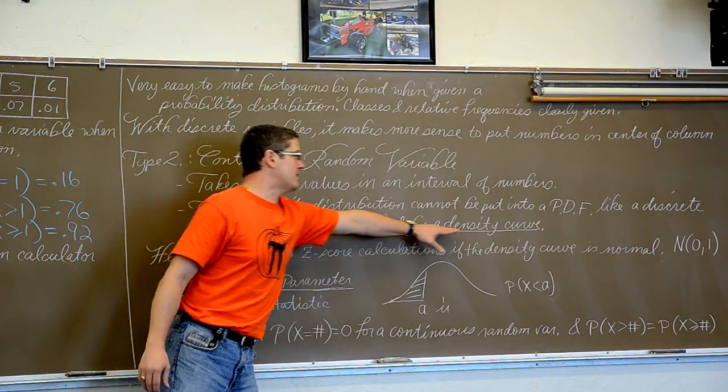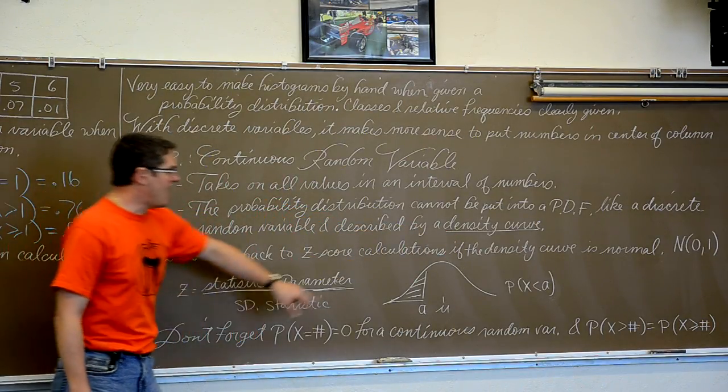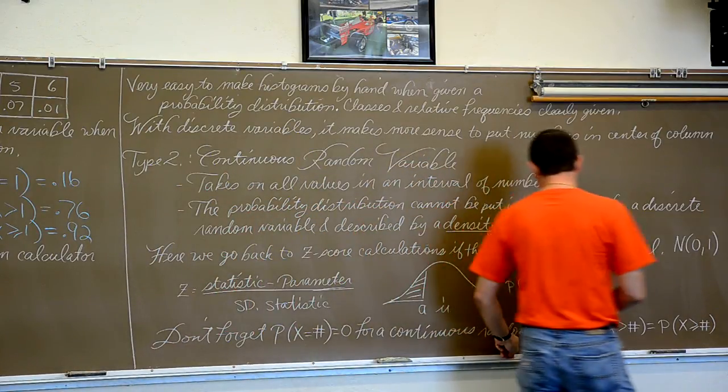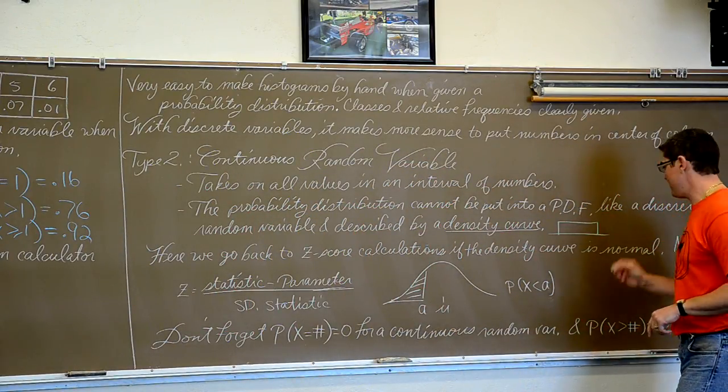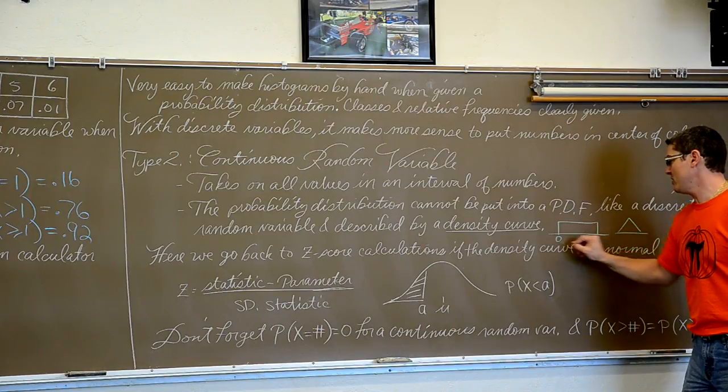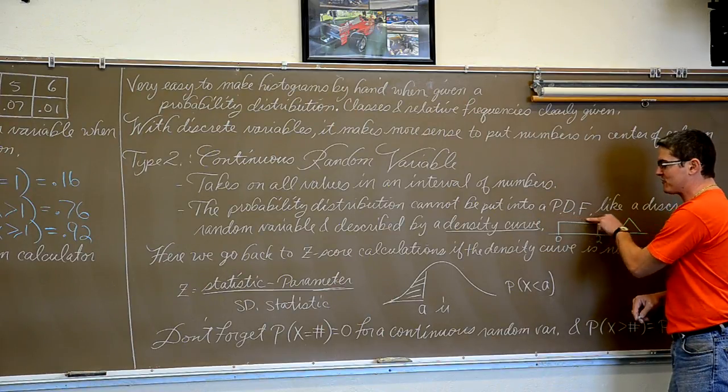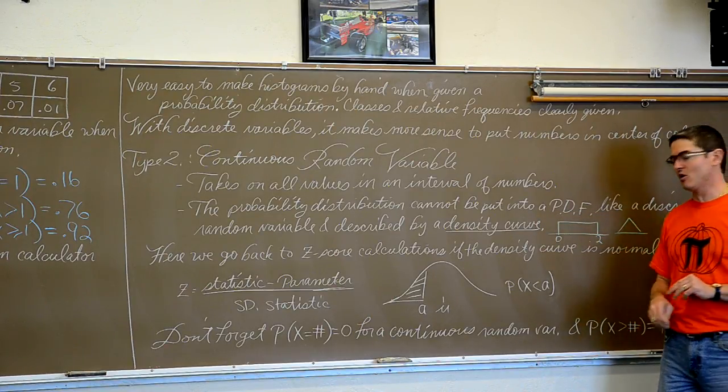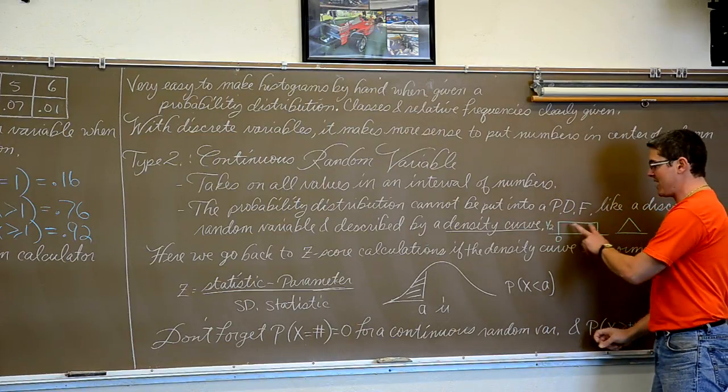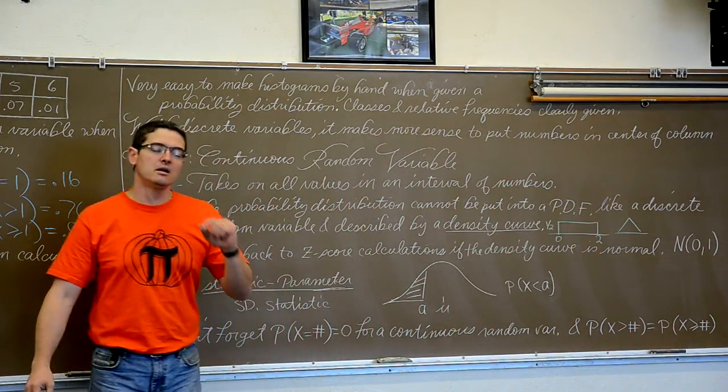That means that we can only describe a continuous random variable with a density curve. And you remember what a density curve is, right? It doesn't have to be a nice bell shaped curve. A density curve could be in the shape of a rectangle. It could be in the shape of a triangle. All you need for a density curve is that the area equals one. So if you have a rectangle with a width of two, its height is only going to be one half because the area must be one. That is really the only defining characteristic of a density curve. The area is one.